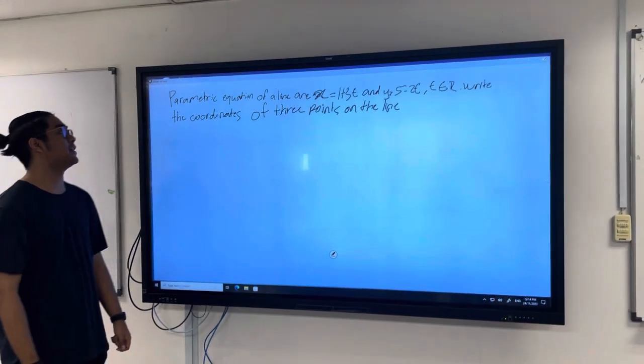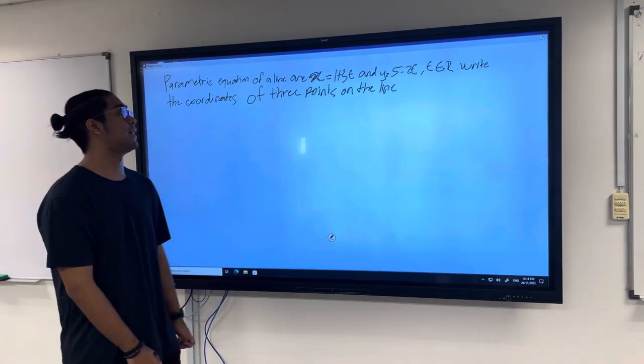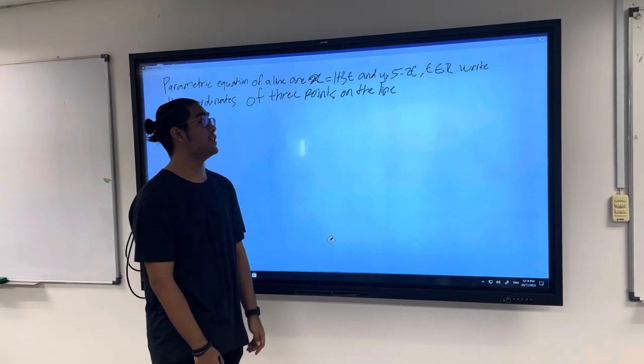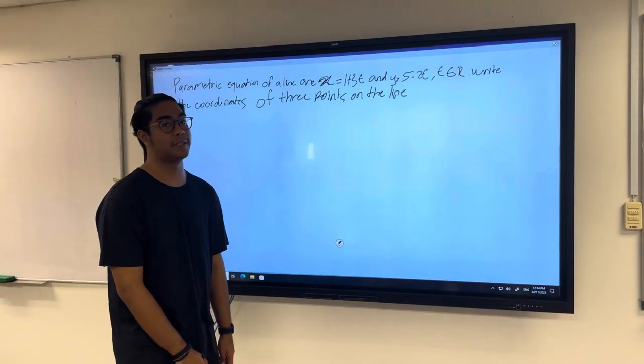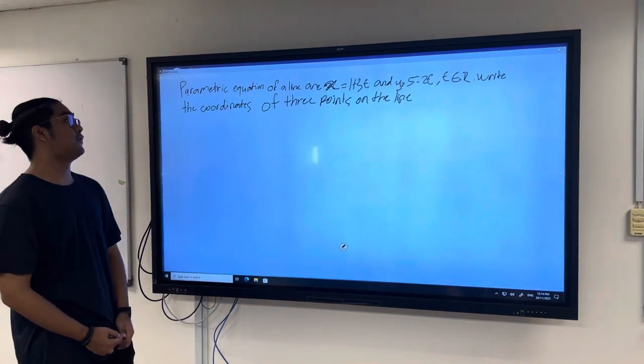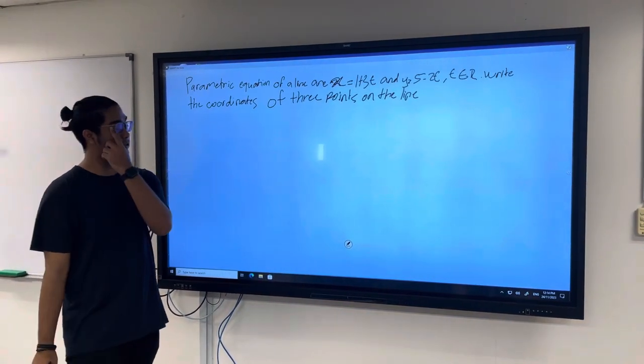For this question, parametric equation of a line are x equals 1 plus 3t and y equals 5 minus 2t, where t equals all real numbers. Write the coordinates of 3 points on the line. So we need 3 points.